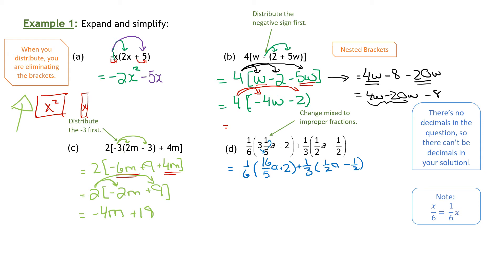Now we're ready to distribute. There's nothing to do inside any of the brackets. So I'm going to multiply first: 1 sixth times 16 over 5. We multiply straight across the top — 16 times 1 is 16 — and straight across the bottom, so that's over 30, and this has an A. The next one is 1 sixth times 2, which is really 2 over 1 — an integer can always be written as a fraction. So 1 times 2 over 6 times 1 is 2 over 6, which I'll reduce to 1 third.